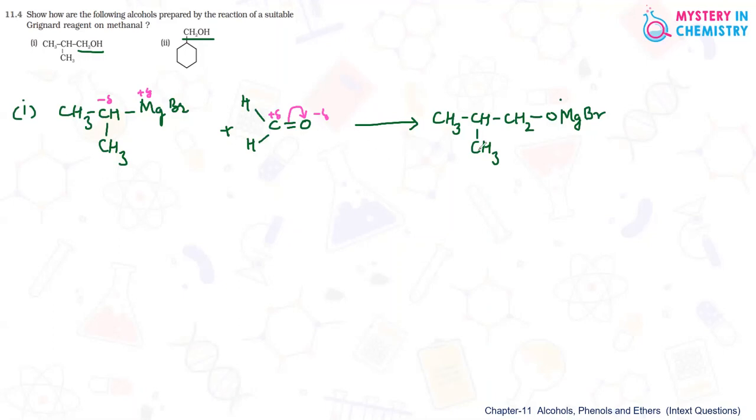The intermediate compound formed is CH3-CH(CH3)-CH2-O-MgBr. The negative part is going to positive; a magnesium-oxygen bond is formed and this intermediate compound is formed. After that, hydrolysis - that is reaction with water.